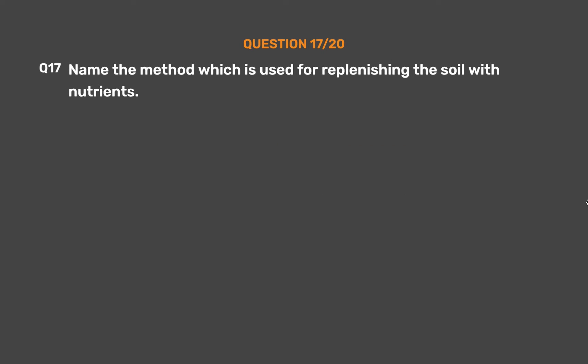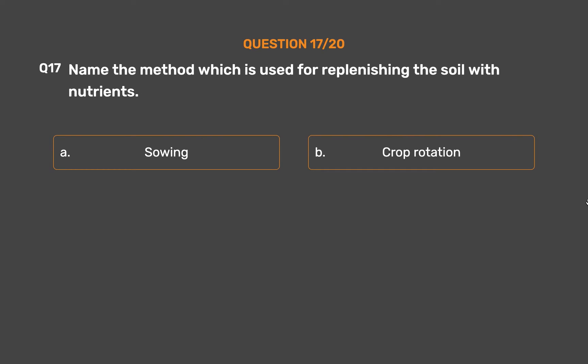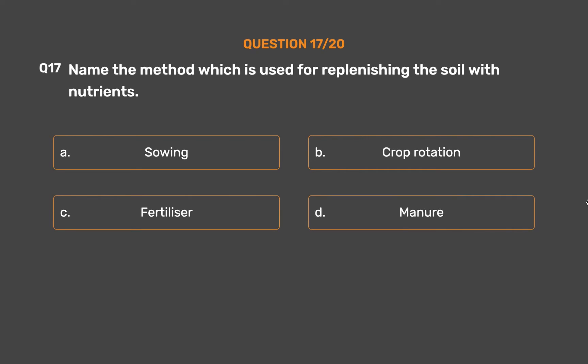Question No. 17: Name the method which is used for replenishing the soil with nutrients. Option A: Sowing. Option B: Crop rotation. Option C: Fertilizer. Option D: Manure.